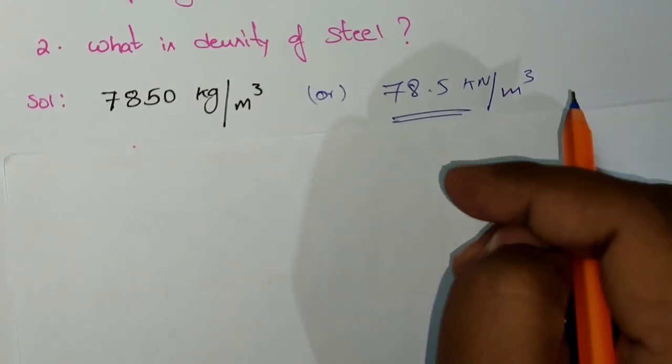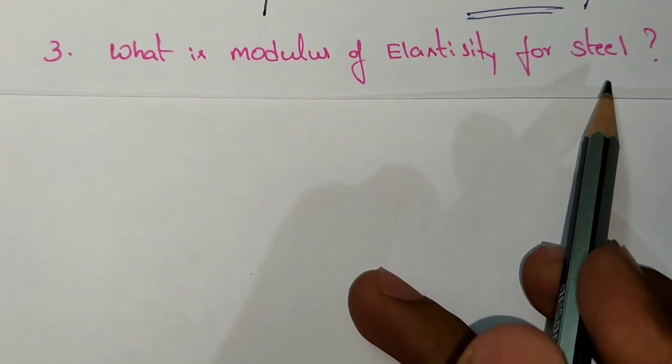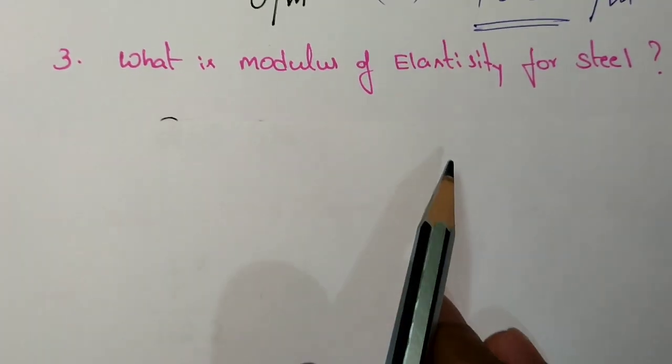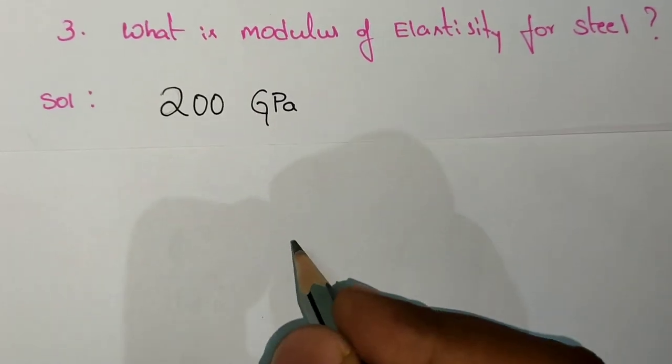The next question is: what is the modulus of elasticity for steel? The modulus of elasticity for steel is 200 gigapascals. But first, what is a Pascal?